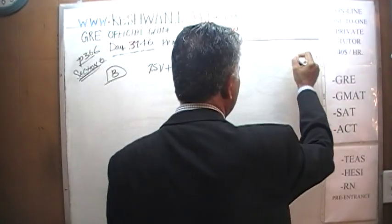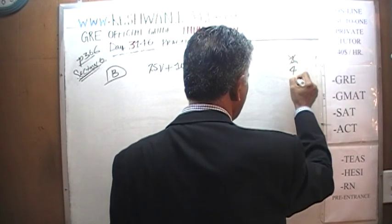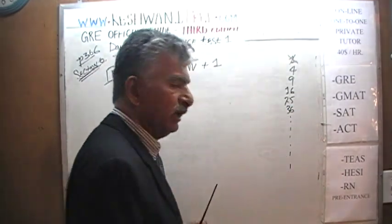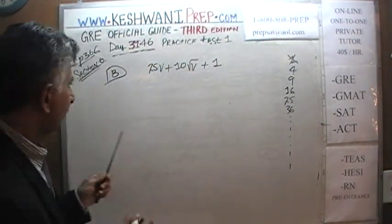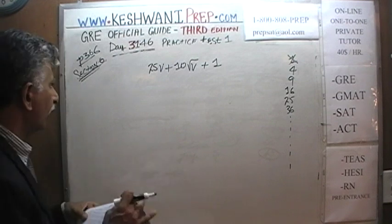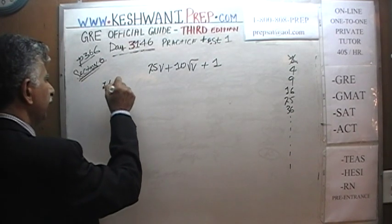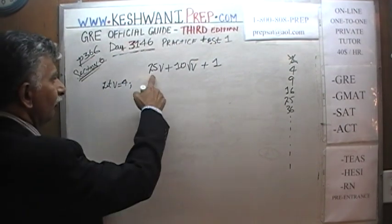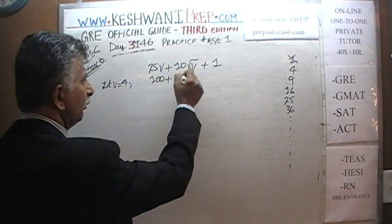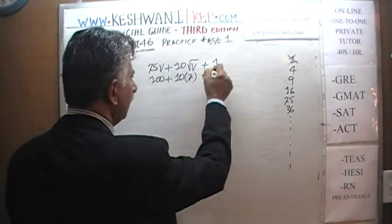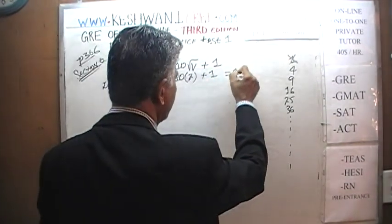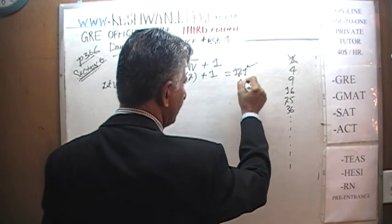Let V equal 4. Then 25 times 4 is 100, plus 10 times the square root of 4, which is 2, giving 20, plus 1. We get 100 plus 20 plus 1, which equals 121 — and 121 is a perfect square because it is the square of 11.